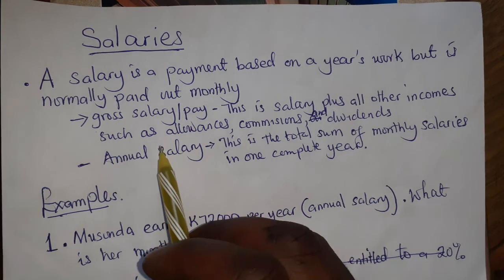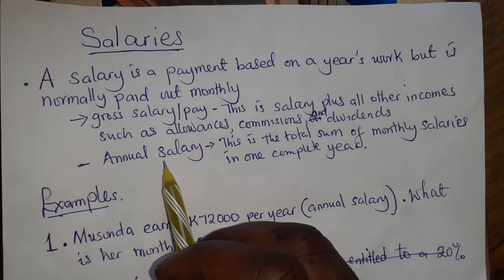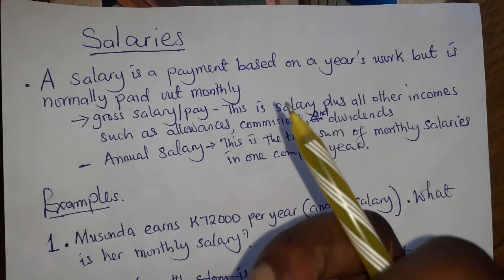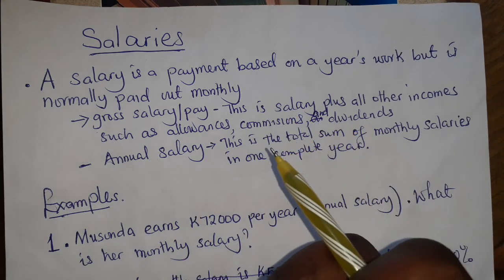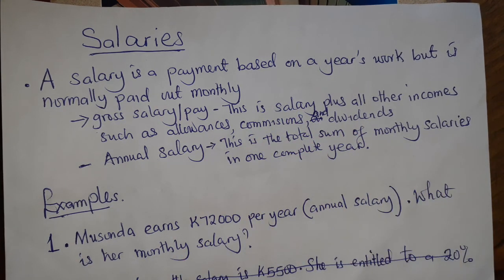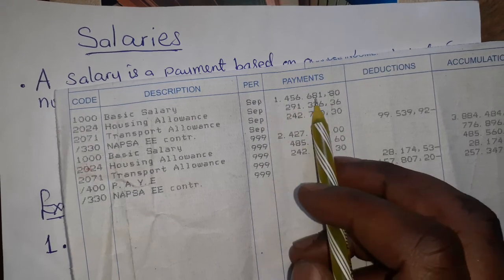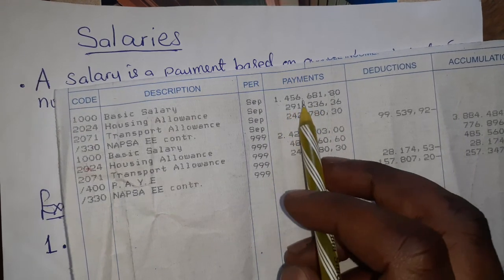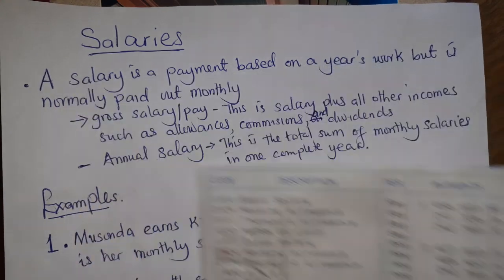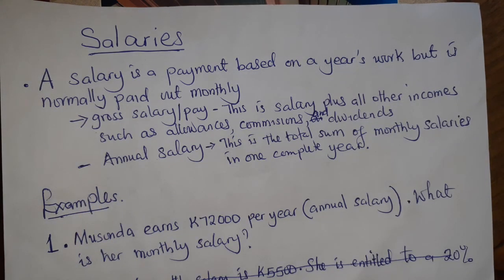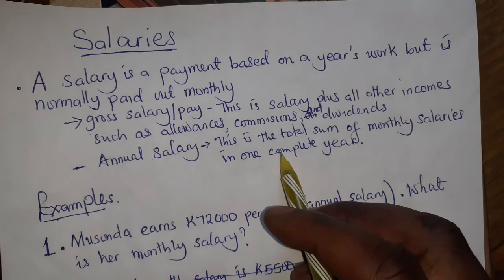An annual salary is your salary for the whole year. When you add all the basic salaries — basic salary multiplied by 12 months — always read the question. The annual salary is the total sum of the monthly salaries that we get in one complete year.